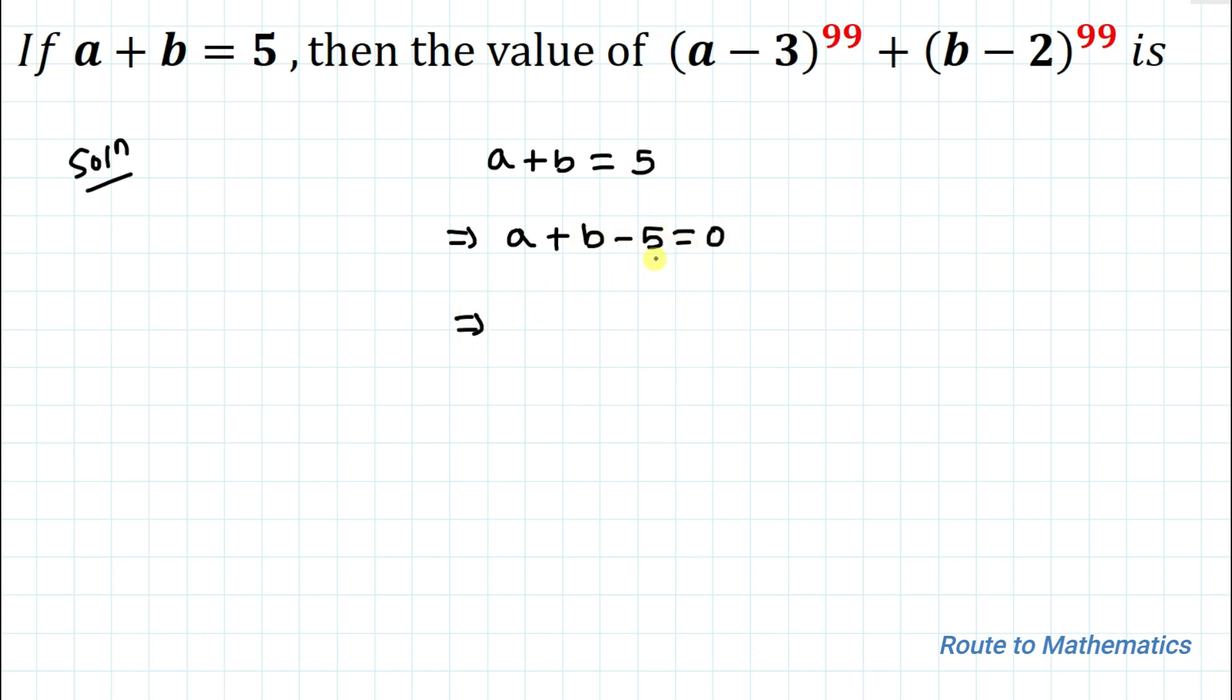In the next step we can write this minus 5 as a minus 3 plus b minus 2 equals 0. This implies a minus 3 equals minus of b minus 2. Let's take it as equation 1.